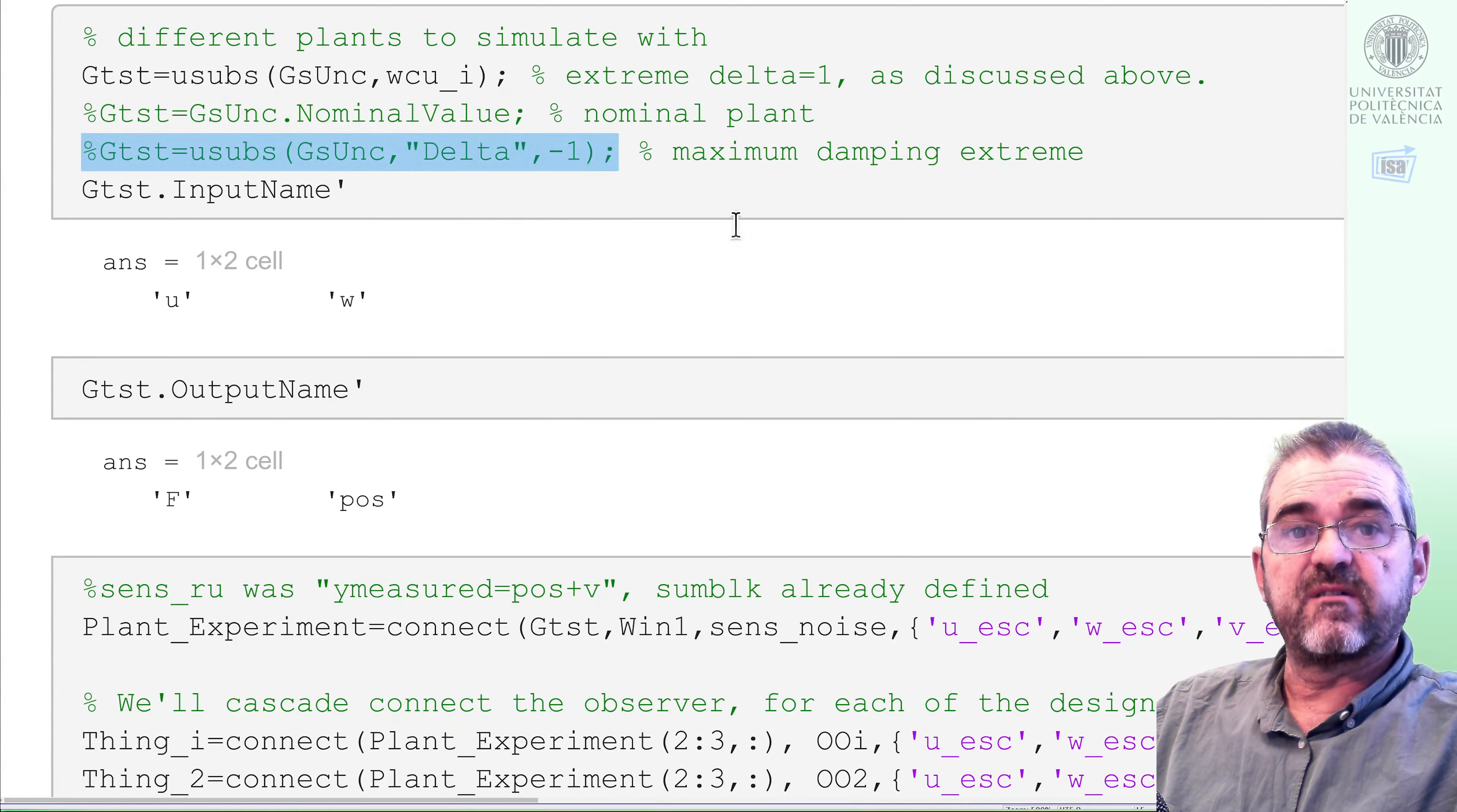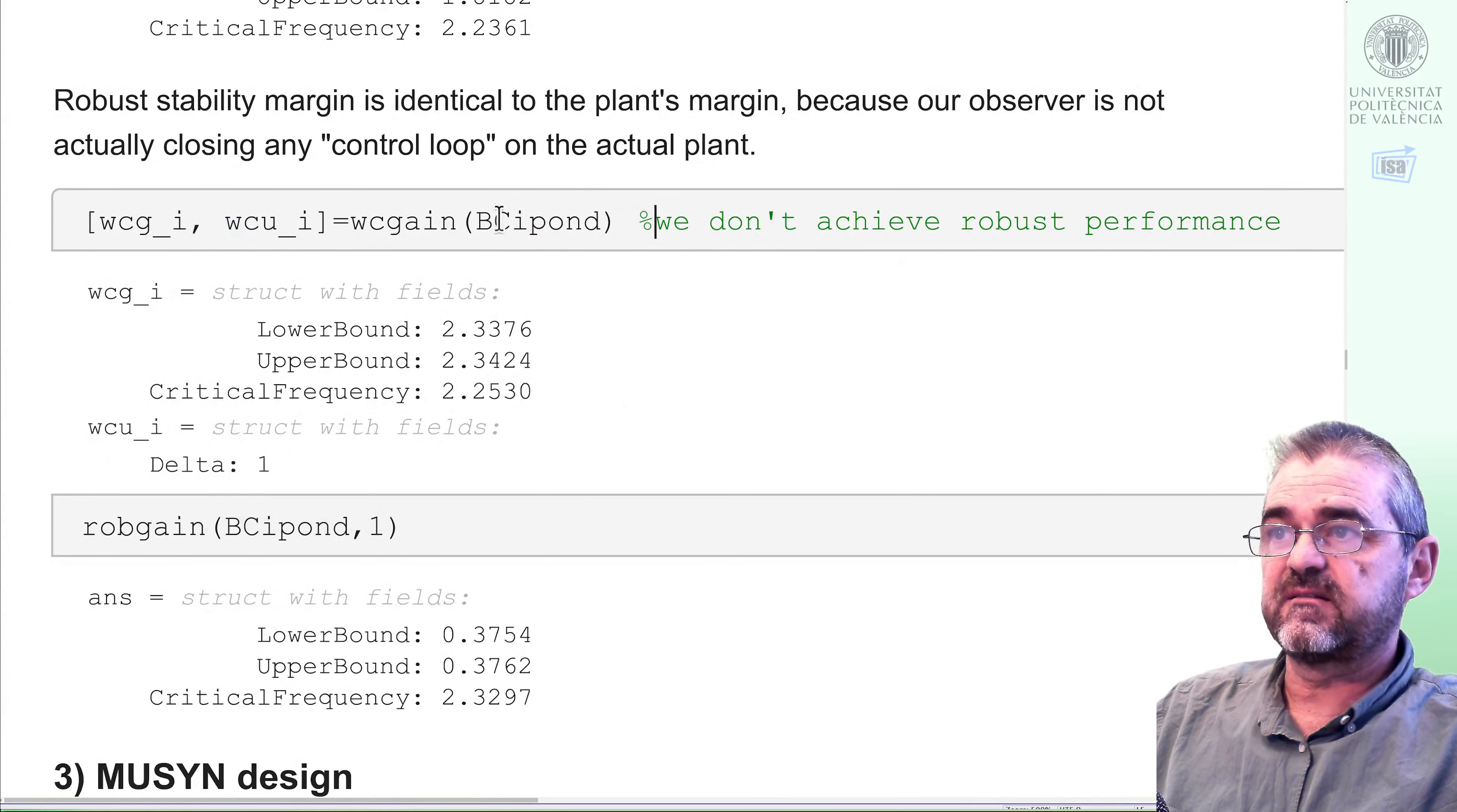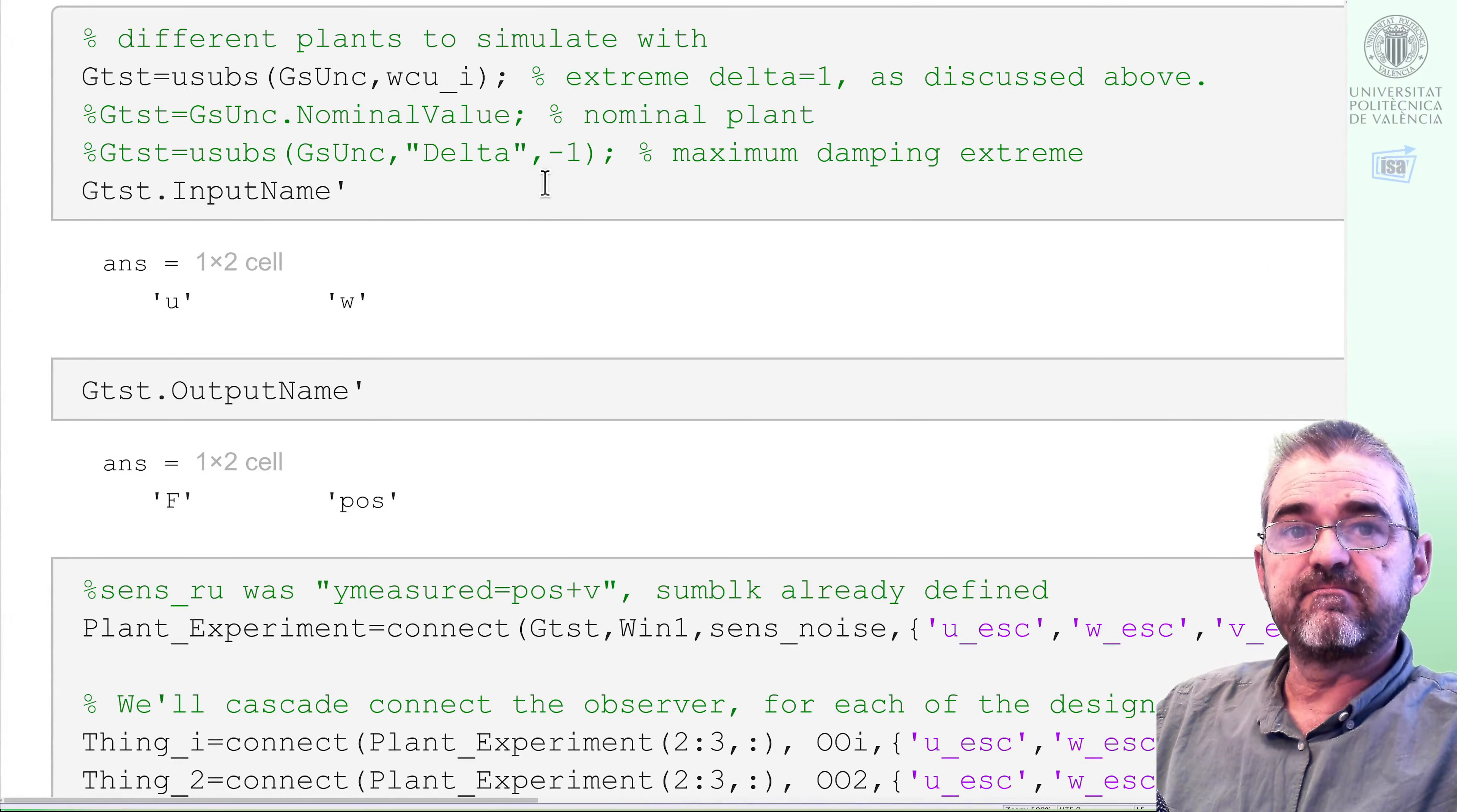This would simulate the maximum damping extreme, and in here we are going to simulate the worst case plant in the H-infinity design, which was obtained by the worst case command when closing the loop with the weighted generalized plant with the H-infinity design, and in fact it was delta equal 1, which corresponds to the lowest damping extreme in my physical model. So if you don't know the code, you can simulate whatever gtst you wish. In here, for brevity, we will just simulate the less damped extreme plant.